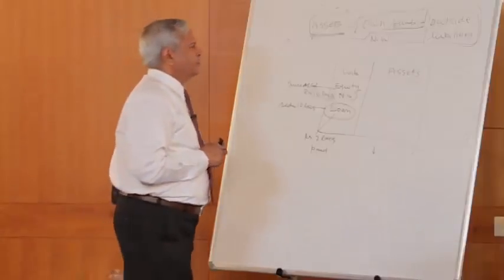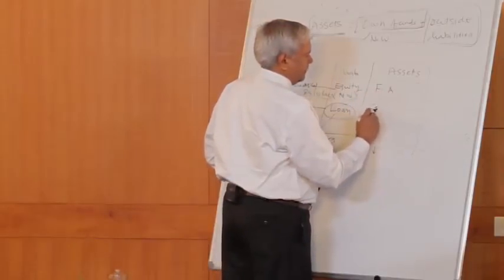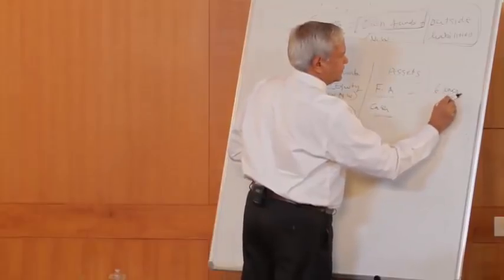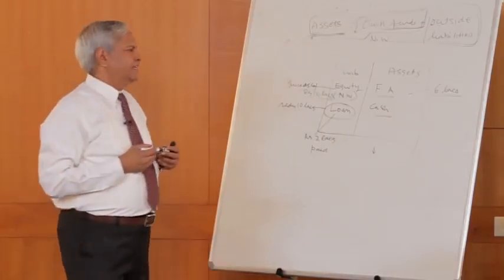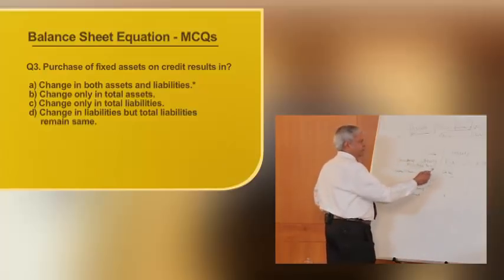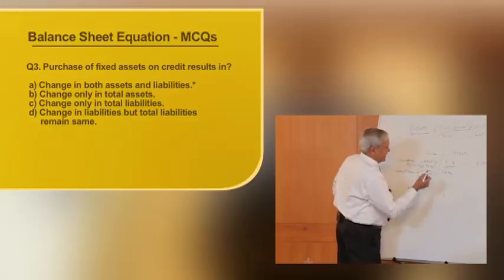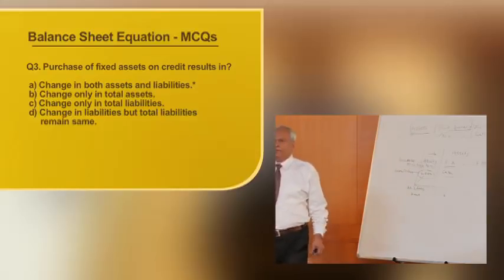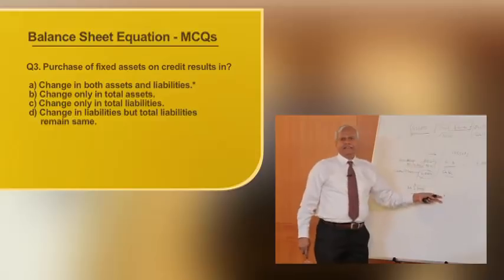The third question is: what happens when fixed assets are purchased on credit? Suppose you purchase fixed assets of rupees 6 lakhs on credit basis — you have not paid the money and will be paying it after 2 or 3 years. Your fixed assets have gone up by rupees 6 lakhs, so total assets have gone up by rupees 6 lakhs. What happens to liabilities? Your loan amount has increased by rupees 6 lakhs, so total liabilities also go up by rupees 6 lakhs. This transaction results in an increase in both total assets and total liabilities.